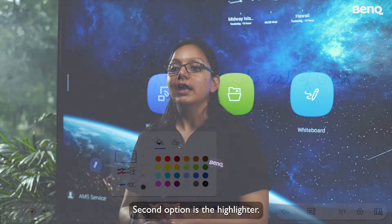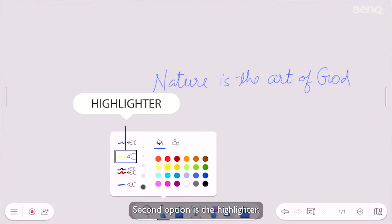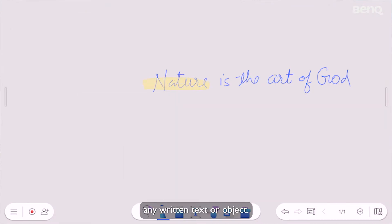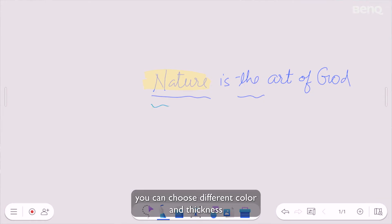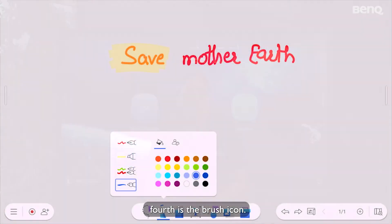Second option is the highlighter. With this, you can highlight any written text or object. Third is the dual pen functionality, which means with different stylus tips, you can choose different color and thickness. Fourth is the brush icon. This tool can be used for freehand drawing.